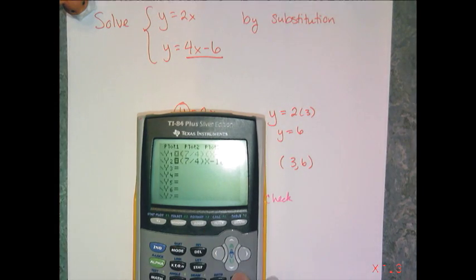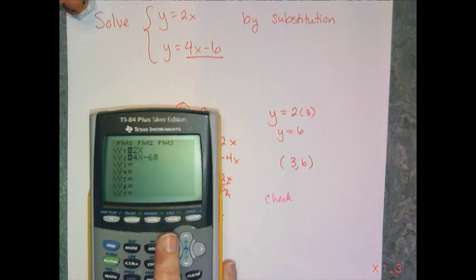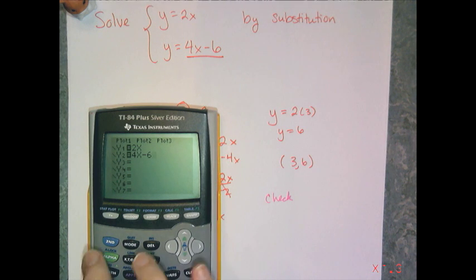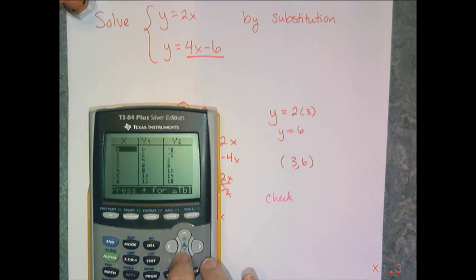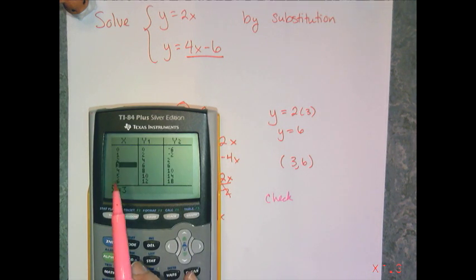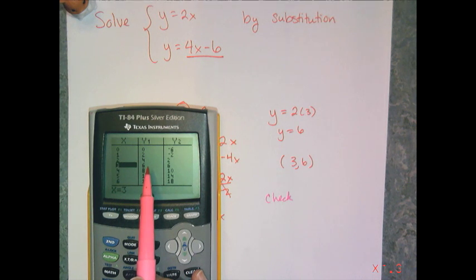So I'm going to go to y equals and clear off the madness that's left up there. And I have 2x is my first equation and I have 4x minus 6 is my second equation. So I'm going to check to see if the point (3,6) belongs to both equations. So I scroll down to 3 and I see at 3, 6 is the y value for y1 and 6 is the y value for y2.